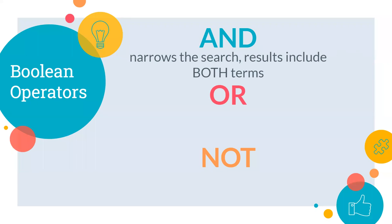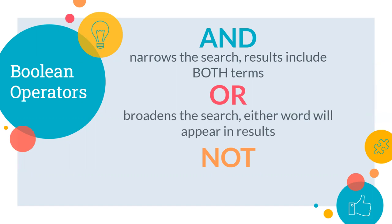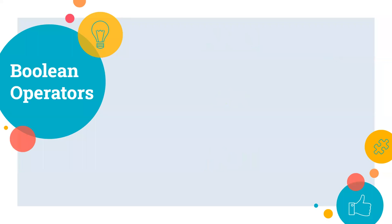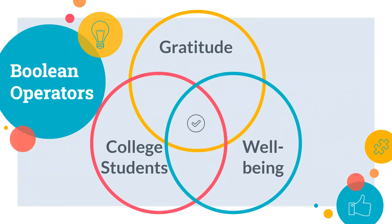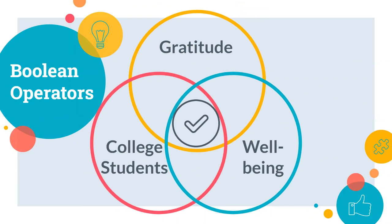AND narrows the search so that both concepts appear in the search results. OR broadens the search, allowing either word to appear in the search results. NOT eliminates a search term from the result list. Using these operators in the database to connect your keywords will help you pull articles that deal with all of your concepts and bring back the most relevant results.